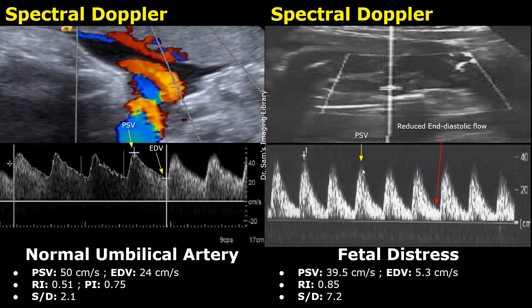On the right is a case showing fetal distress. On spectral Doppler, the EDV is present but it is reduced — the forward flow during diastole is not sufficient. The umbilical artery PSV is 39.5 centimeters per second, and the EDV is 5.3 centimeters per second. The RI is 0.85 and the SD ratio is 7.2 — both are elevated because the EDV is only 5.3 centimeters per second. The reduced EDV led to abnormal values of SD ratio and resistive index.